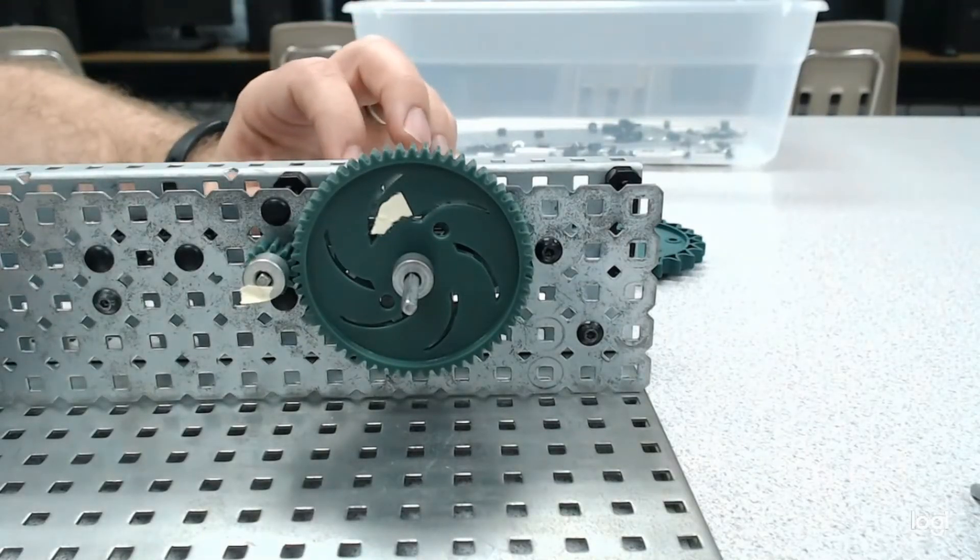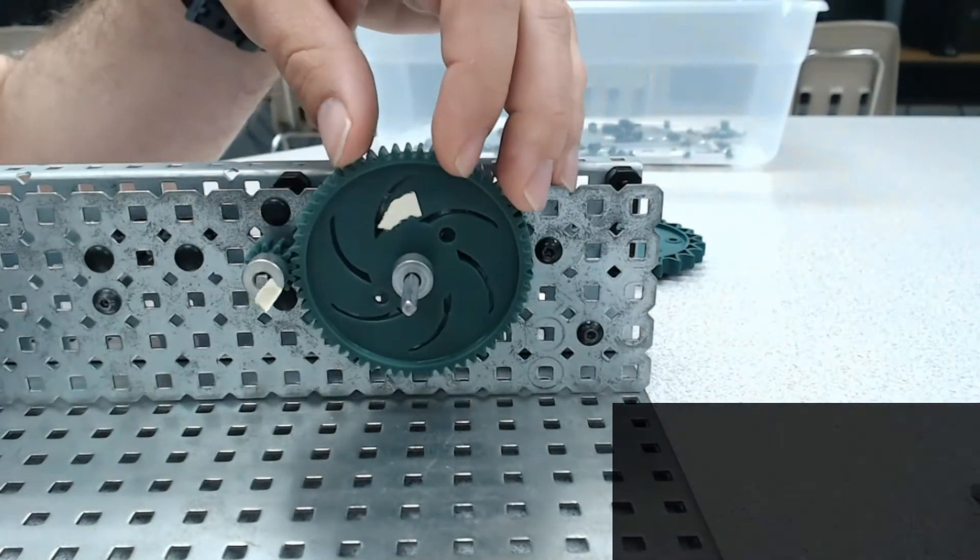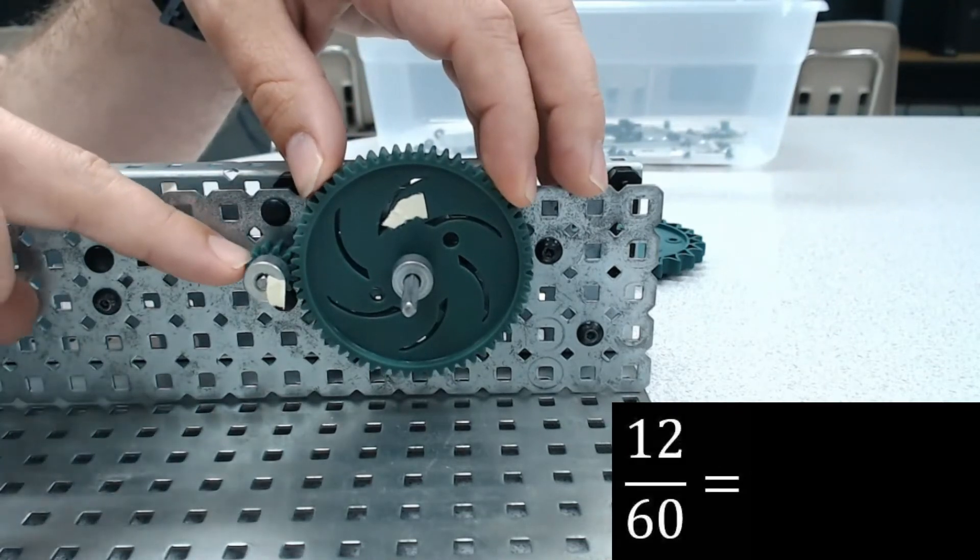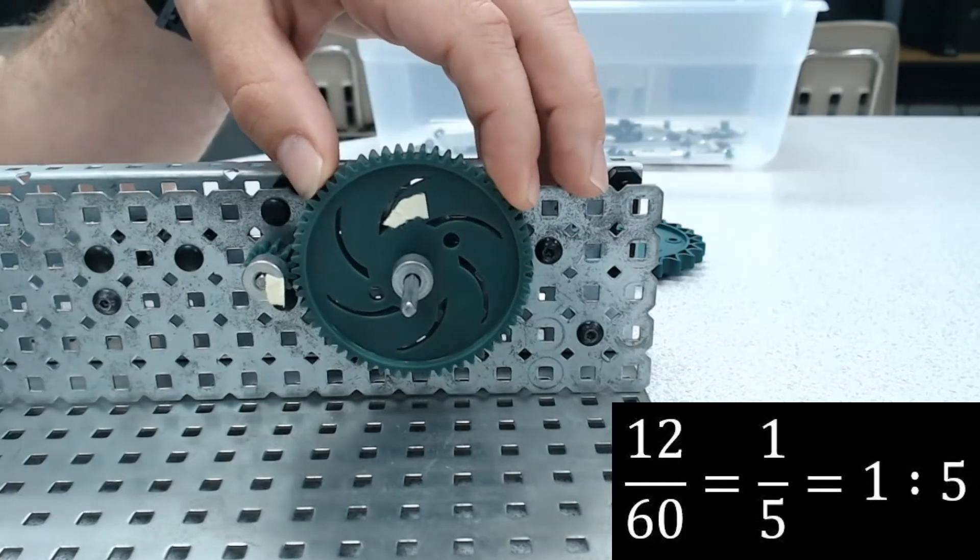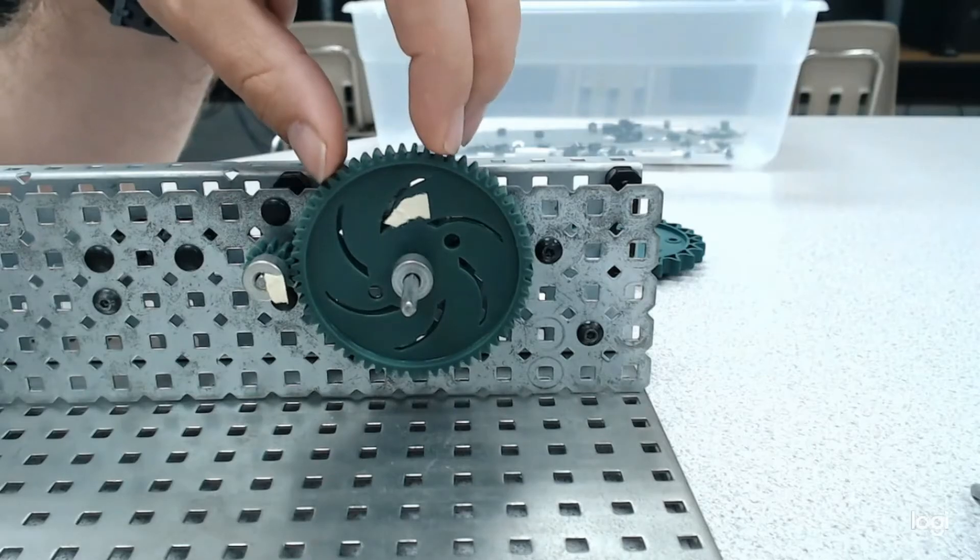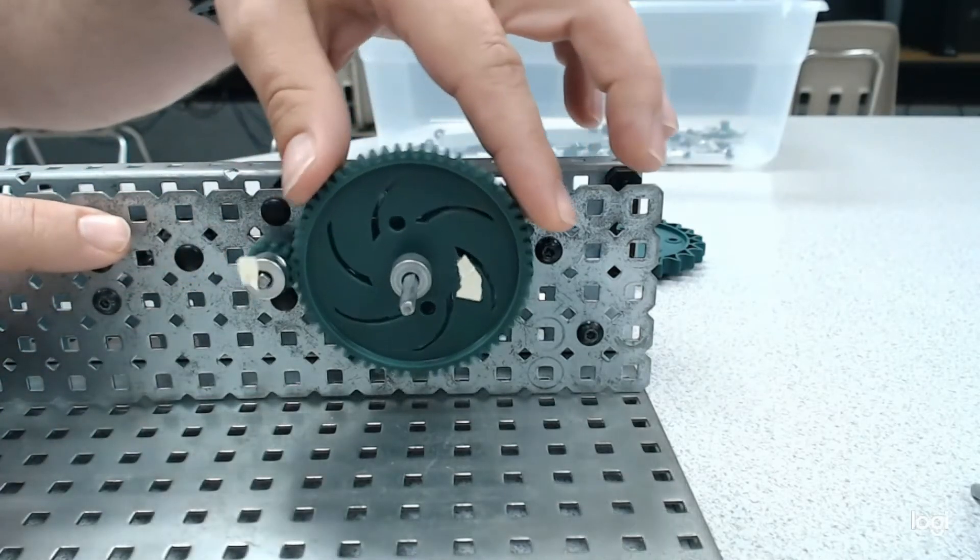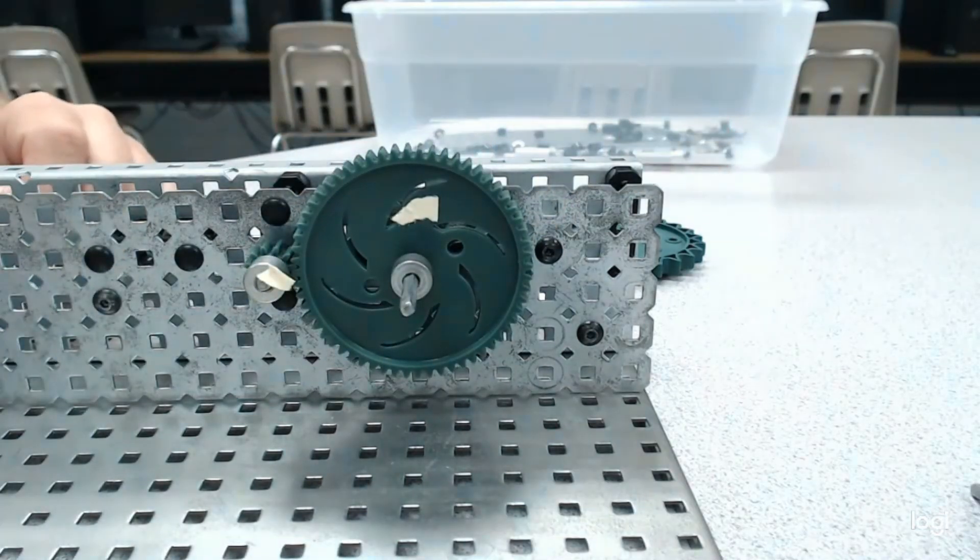If I switch this to the other side however and I make this my input, now we need to reverse the formula. 12 is my output. So 12 divided by 60 means 1 fifth or 1 to 5. That means one rotation of my input is going to get me five rotations of the output. And we see that that holds true.